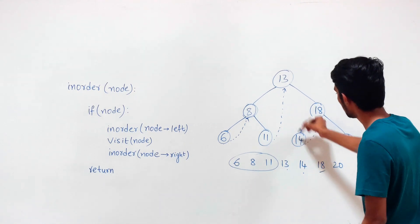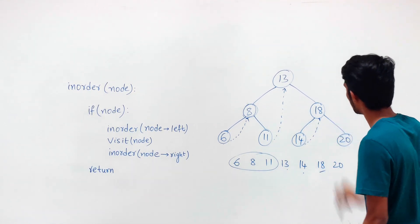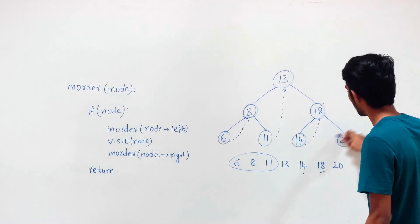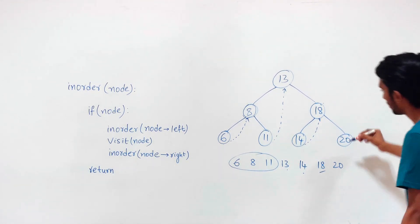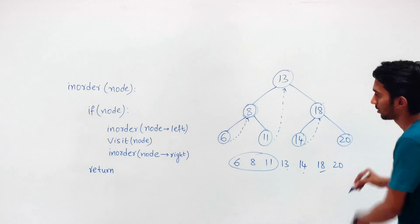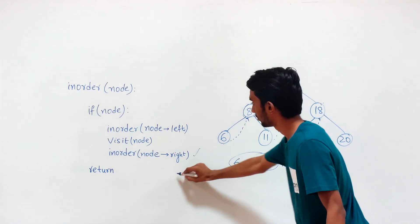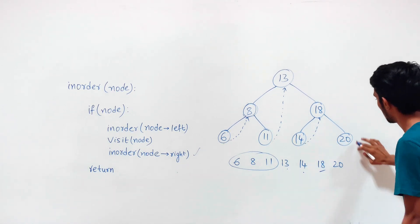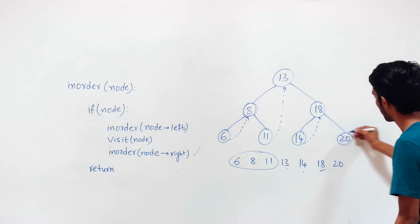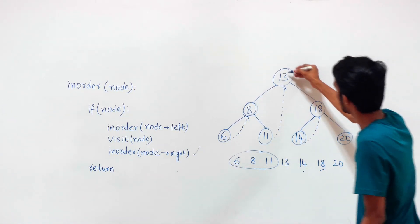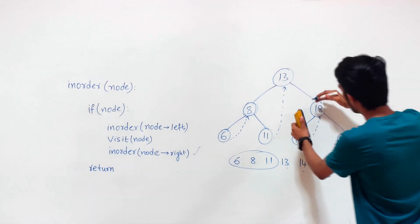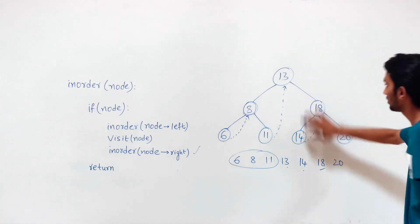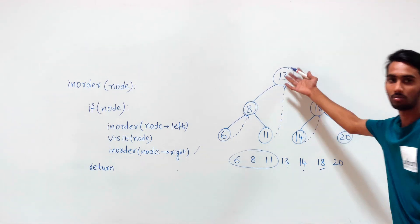After we are done with the left subtree containing 14, we get back to 18, visit 18, and give control to the right subtree. After giving control to the right subtree, we don't need to get back to the root node again — we are returning from the function. In the iterative version, we don't need to return to the root node after finishing the right subtree.